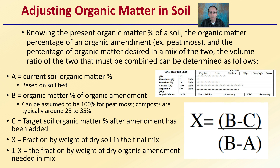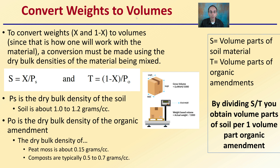We'll take this one step further and go from weight to volume, which is what most people purchase things in or tend to think in. To convert weights — X and 1 minus X — to volumes, a conversion must be made using the dry bulk densities of the materials to be mixed. PS is the dry bulk density of the soil, typically 1.0 to 1.2 grams per cubic centimeter, and can usually be found on most soil reports.